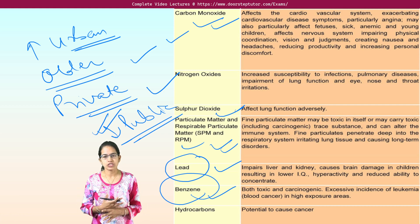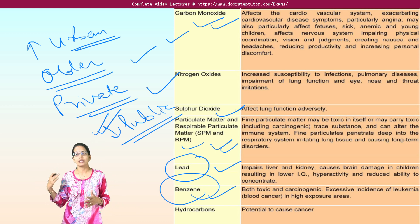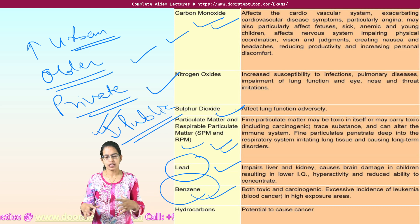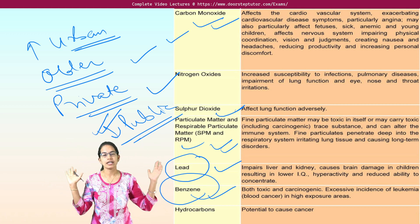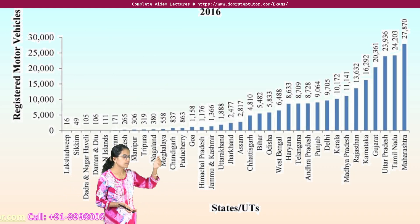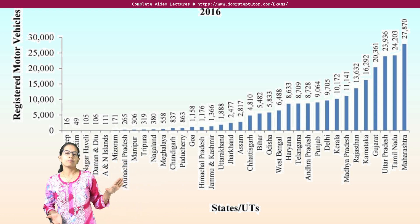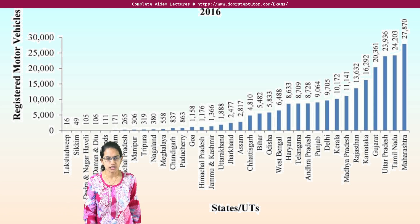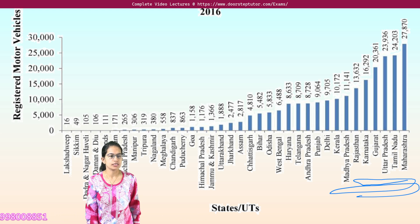At traffic intersections and junctions, it creates more problems. With a higher number of skyscrapers being built, there is stagnation at ground level that does not allow proper dispersal of pollutants into the atmosphere, and air gets trapped within the urban vicinity, further increasing the amount of harmful pollutants. Looking at a graph of registered motor vehicles in thousands (2016 data), states like Maharashtra, Tamil Nadu, UP, Gujarat, Karnataka, Rajasthan, and MP have extremely high numbers of vehicles in contrast to northeastern states and union territories.